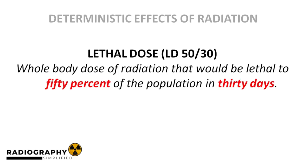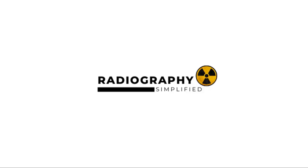We close off this video by introducing the term lethal dose — the dose of radiation that is likely to cause death. It is commonly expressed as LD50/30, which is the whole-body dose of radiation that would be lethal to 50% of the population in 30 days. In humans, this is between 3 to 4 gray. However, history shows that individuals have survived as high as 8.5 gray with medical support. That concludes our discussion on deterministic effects of radiation. We wrap up the radiation biology conversation in our next video.